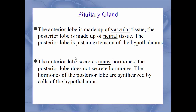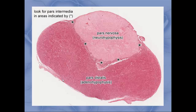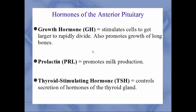The anterior lobe secretes many hormones, while the posterior lobe does not synthesize hormones — the hormones associated with the posterior lobe are actually made in the hypothalamus and just stored there until needed. In cross-section, the two lobes look very different: the anterior lobe stains darker because it is vascular tissue, and the posterior lobe stains lighter because it is neural tissue.